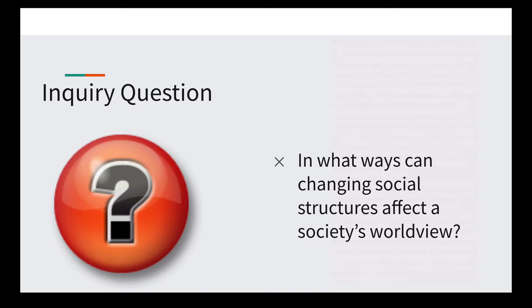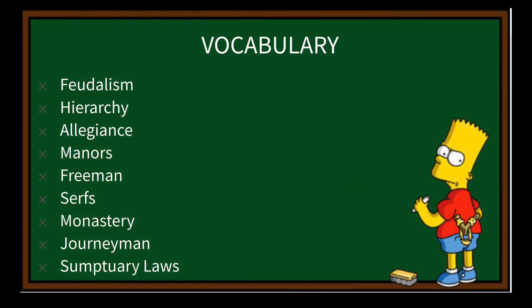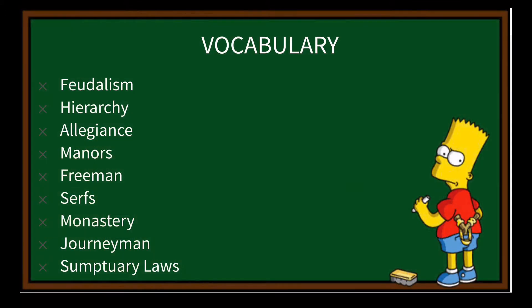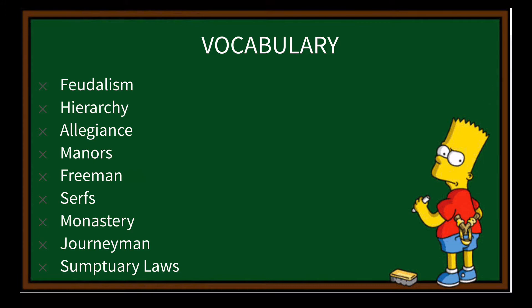This opening story and chapter will help us answer the question: in what ways can changing social structures affect a society's world view? There are a few vocabulary words you will be responsible for — feudalism, hierarchy, allegiance, manners, free man, serfs, monastery, journeyman, and sanctuary laws.